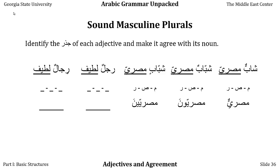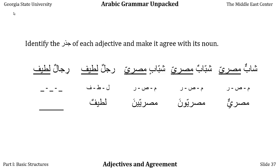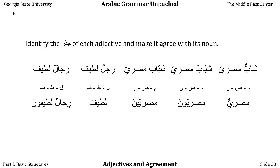In the next example, we have rajulun — a man in the nominative case. Let's make him a nice man with latif. We don't have to do anything to the adjective since rajul is masculine singular — just add case markings: rajulun latifun, a nice man. Now the human plural of rajul is rijal — men. Still in the nominative case. The root for latif is lam-ta'-fa. Using the sound masculine plural: rijalun latifun, nice men.